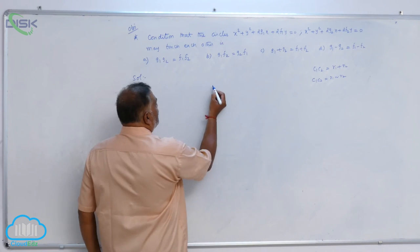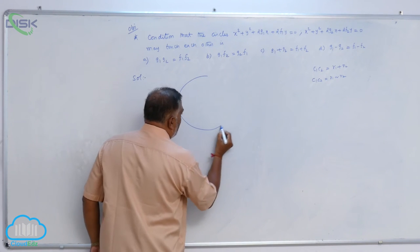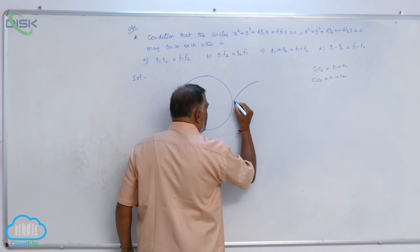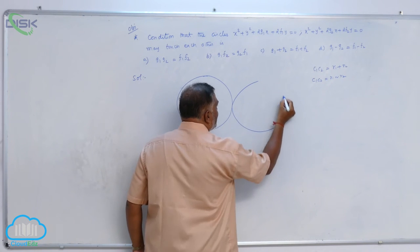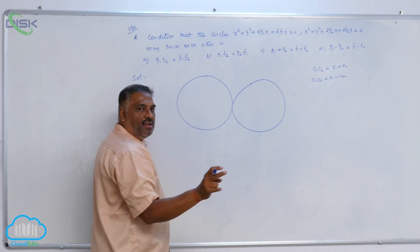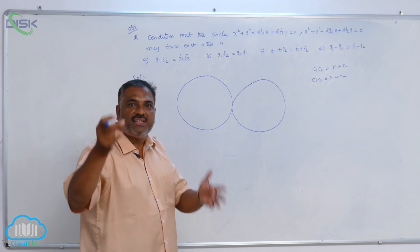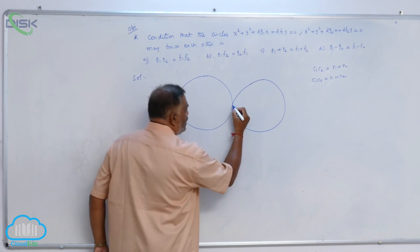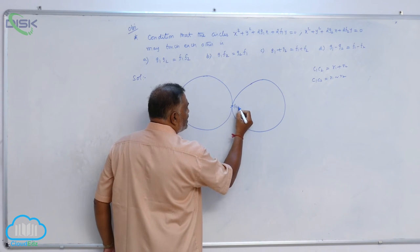So, circle number 1 and circle number 2 both are passing through the origin. Of course, they touch each other. So, touching each other is only one point. That common point is nothing but origin. So, they need to touch invariably at 0,0.